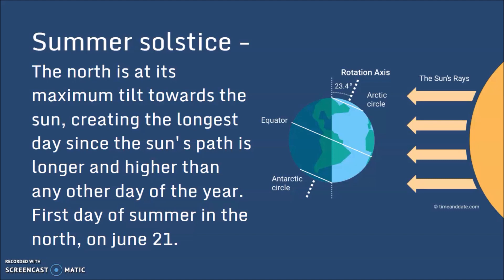The summer solstice is when the North is at its maximum tilt towards the Sun. This creates the longest day, since the Sun's path in the sky is going to be the longest, and it's going to go the highest than any other day of the year. The first day of summer in the northern hemisphere is on June 21st.